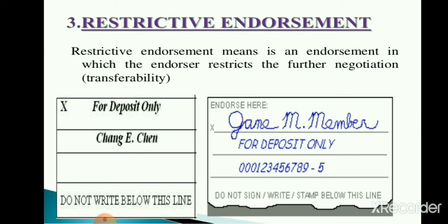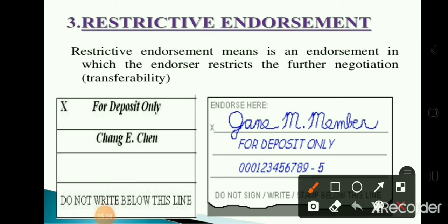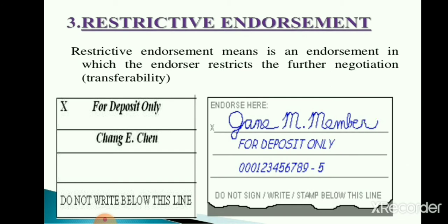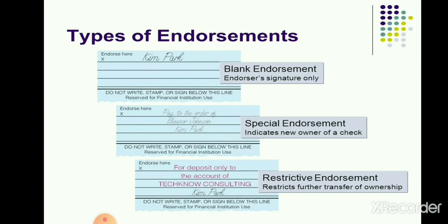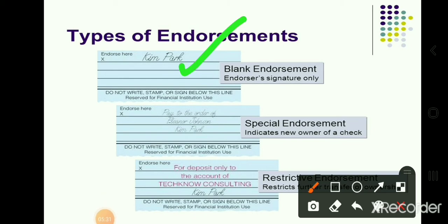Next is restrictive endorsement. As the name suggests, in this the endorser restricts the further negotiation or transferability of the instrument. For this purpose, the word 'only' is used. As you can see on the screen, the difference among blank endorsement, complete endorsement, and restrictive endorsement is shown with the help of specimens. In blank endorsement only a signature is made; in special/complete endorsement the name of the person in whose favor it is made is added; and in restrictive endorsement the word 'only' is used, making it non-negotiable further.